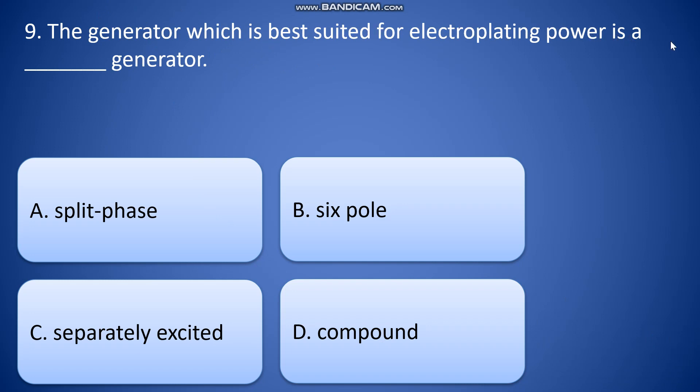The generator which is best suited for electroplating power is a blank generator: A: shunt, B: six-pole, C: separately excited, and D: compound. So the answer will be C, separately excited.